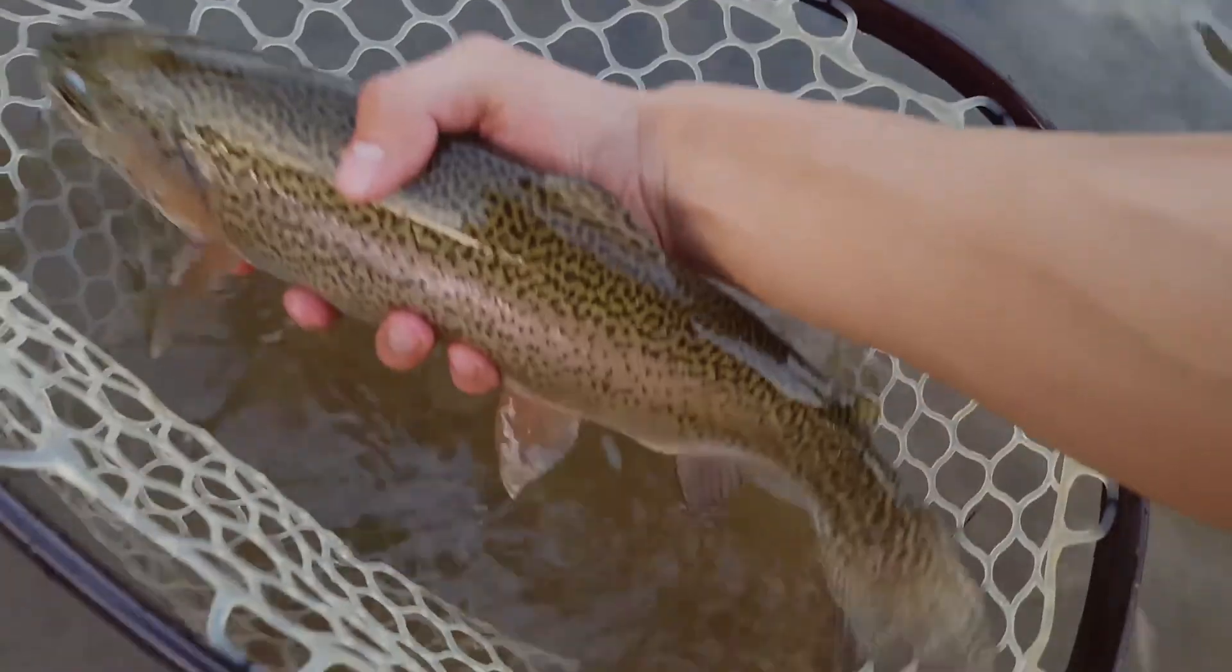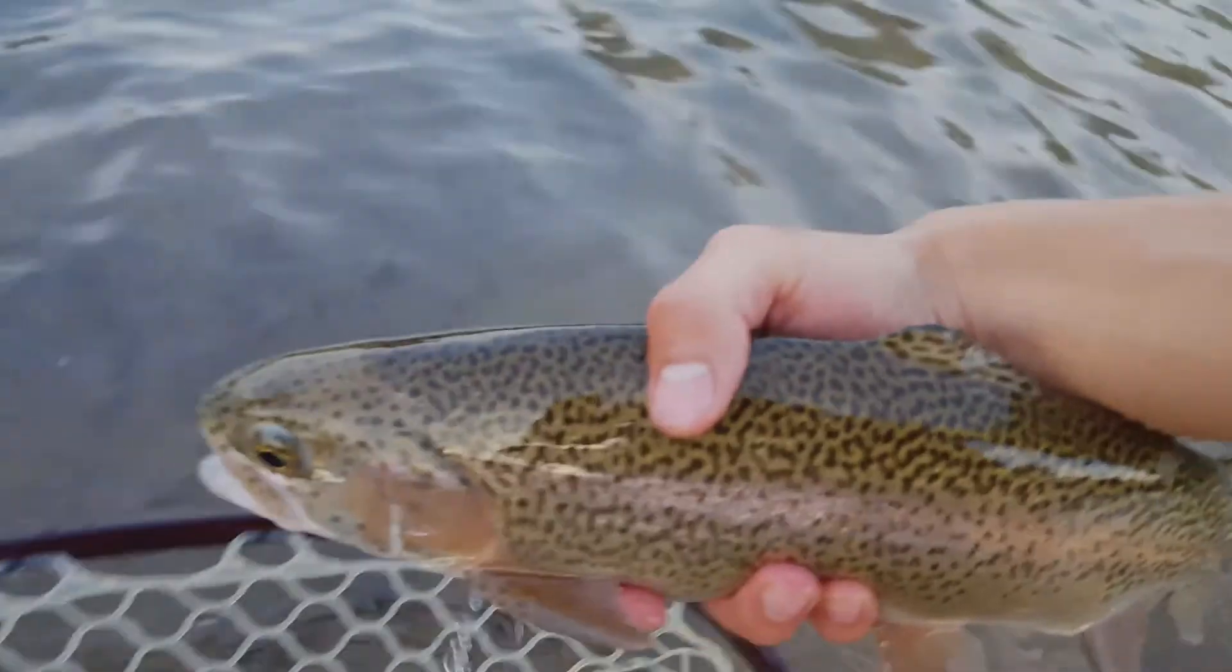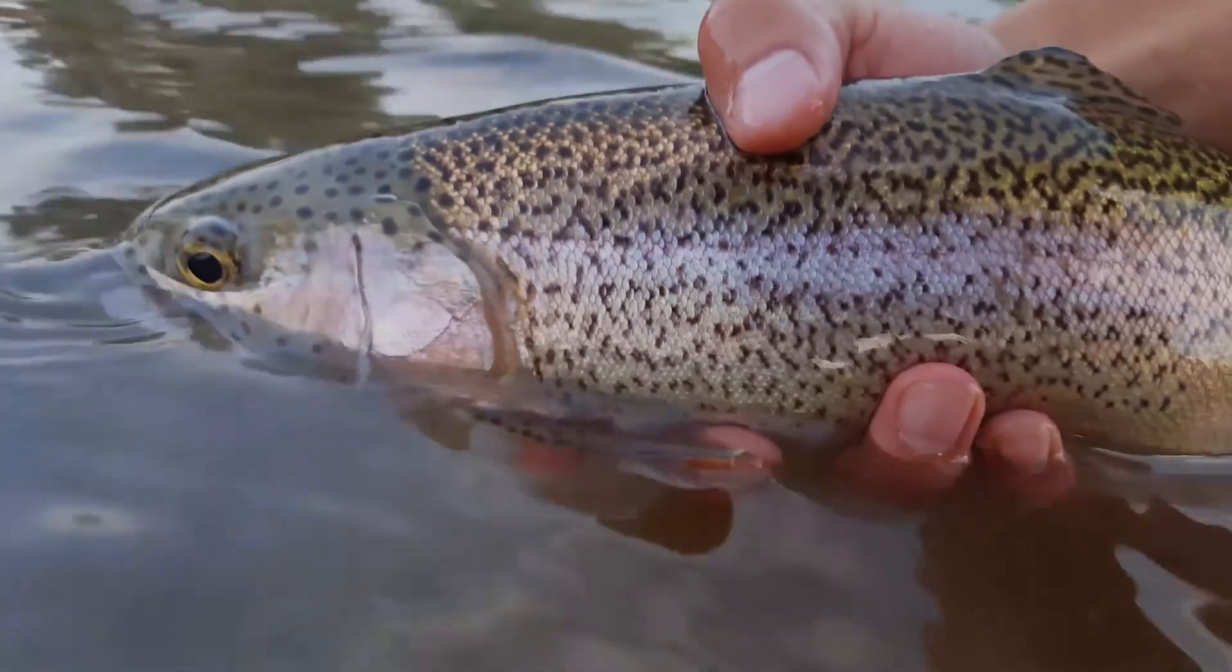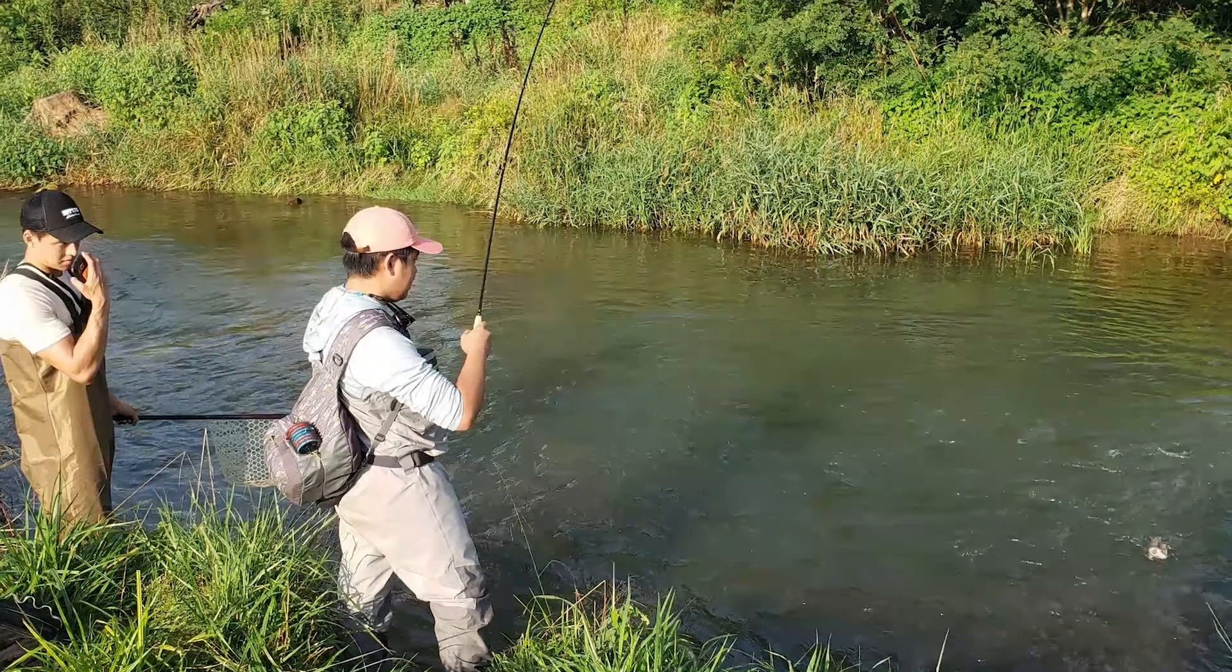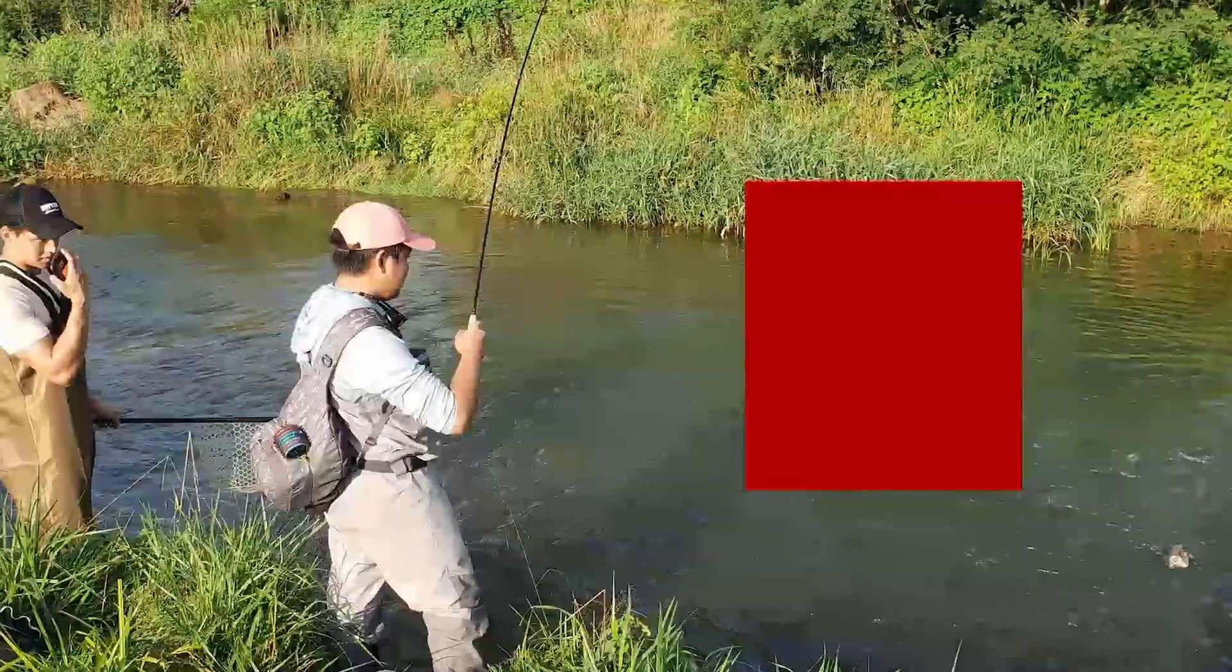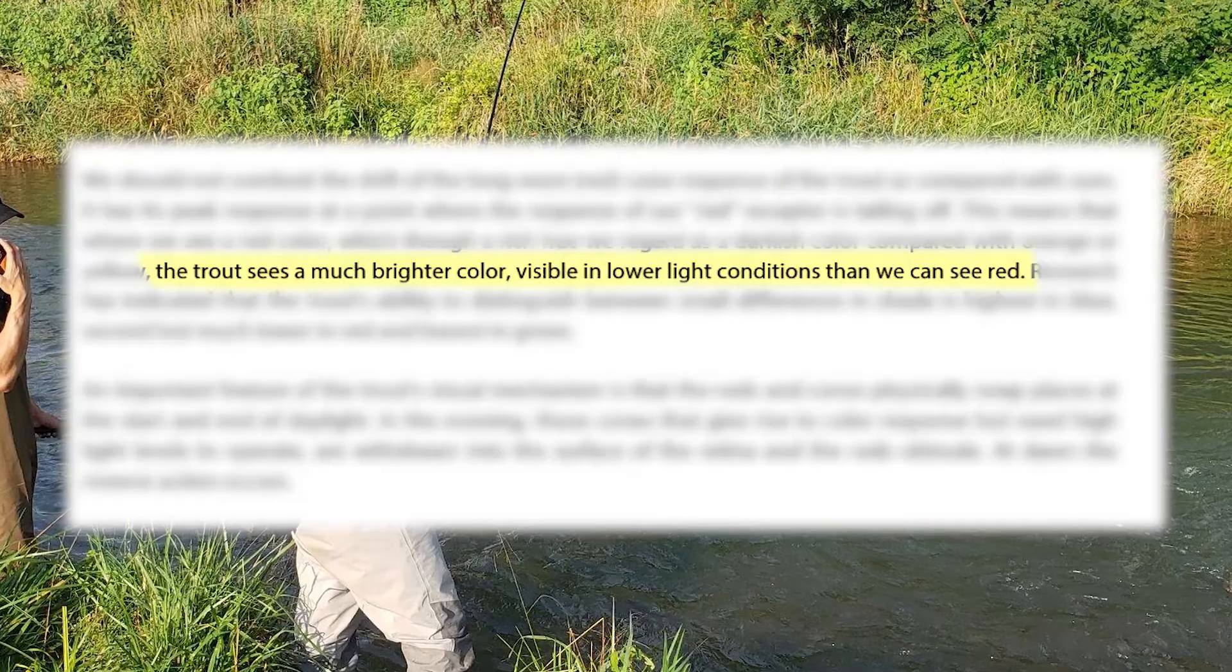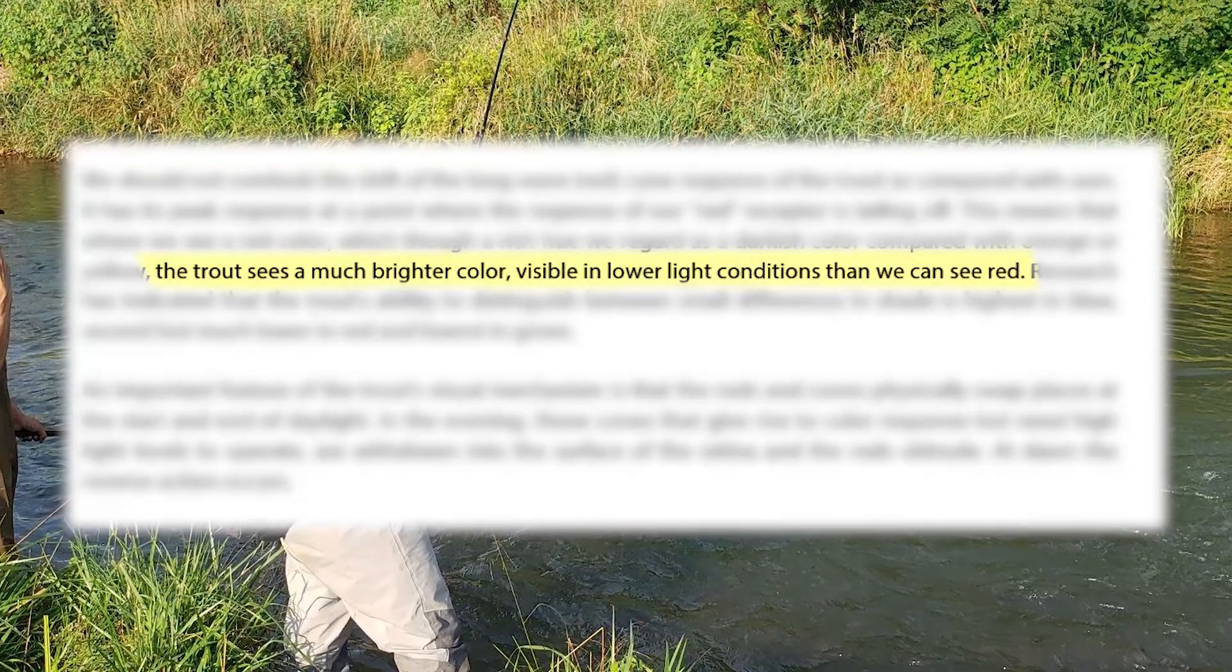Under Sunderland's observation, knowledge of this variation in a trout's physical optical biology could have useful applications extending to fly selection in the field, where a darker red fly may become more useful in lower light conditions compared to its light red counterpart, since the trout sees a much brighter color visible in lower light conditions.